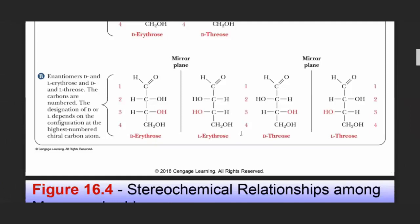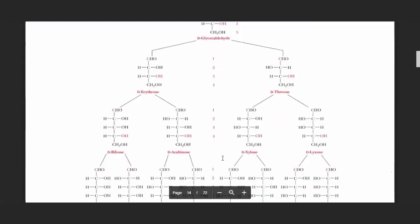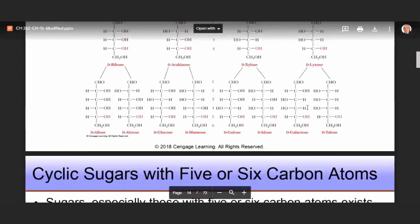An aldopentose with three chiral carbons gives 2^3 = eight possible stereoisomers: four D-forms and four L-forms. D-sugars rather than L-sugars predominate in nature, even for all sugar classes. We have trioses, then tetroses, then pentoses, and then hexoses with six carbons.